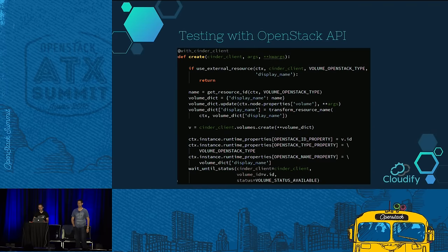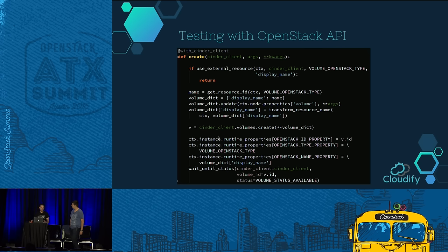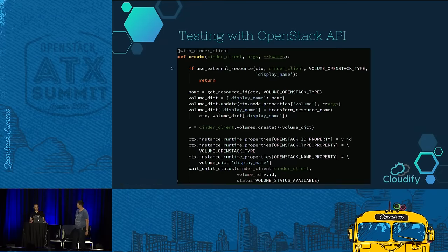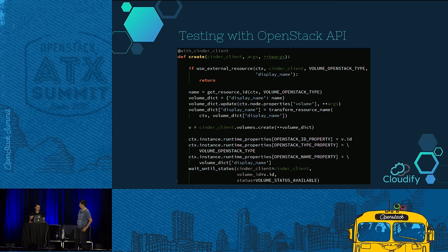Here's a code sample for creating a volume. You have Cloudify code before and after the create volume call using the Cinder client. Those sections are tested using normal unit tests. We inject the Cinder client using a decorator up top, so it's easy to mock and ensure unit tests never communicate with any OpenStack deployment. Then you'd have an integration test checking this specific method including the call to the Cinder client, and a system test which also tests this together with other OpenStack resource creation and orchestration.